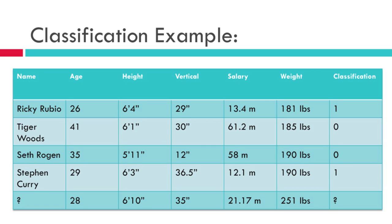Here's the example. I put together this table of people, and some of them are basketball players and some of them aren't. We've got Ricky Rubio and Steph Curry — both NBA players. By looking at these features, each column is going to be a feature.